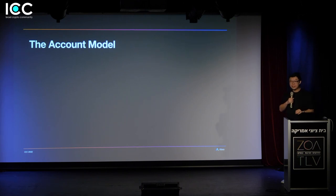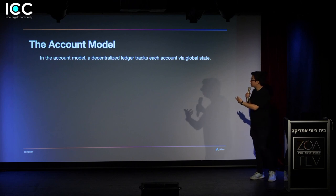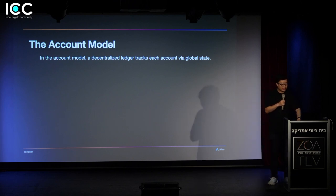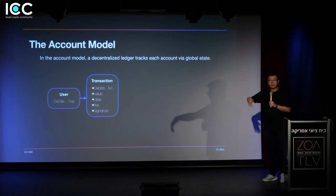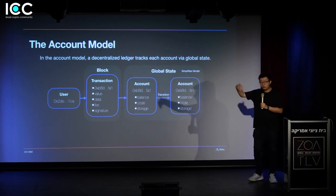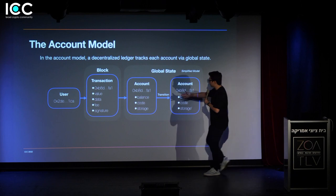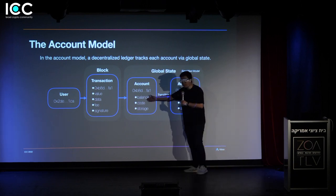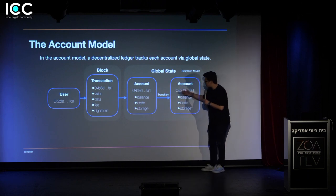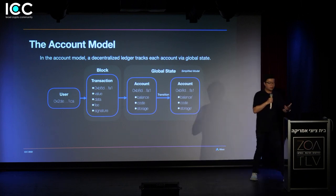To see how we got there, let's start with the account model. The account model is the Ethereum model that many people are familiar with. The account model is a decentralized ledger that tracks each account via global state. A user comes and says they want a transaction executed, and they signed it. It gets put into a block, put on-chain, and every node re-executes it. If the computation is valid and the signature is valid, the state for that application is updated — you see the state transition. There's an account with a balance, some code, and some storage. After the transition, we have balance prime, the same code, and storage prime. That's the account model in a nutshell.